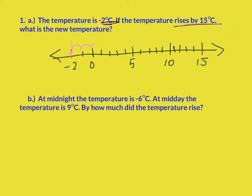So that's 1, 2, 3, 4, 5, 6, 7, 8, 9, 10, 12, 13, 14, 15 — this is the spot I end. And that is 10, 11, 12, 13 degrees. So the answer to this question is 13 degrees Celsius.